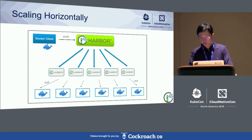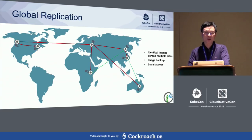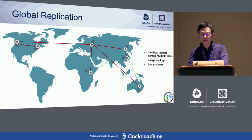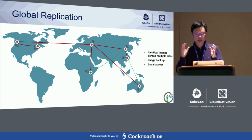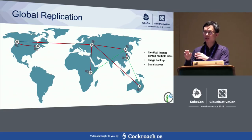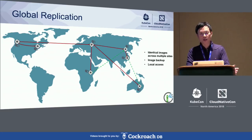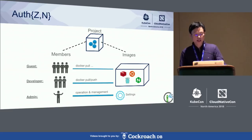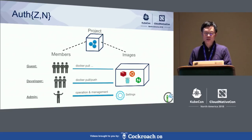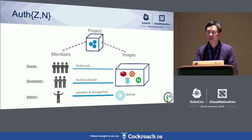Another replication use case is global replication — replicating images across different locations, either in the cloud or in data centers. We have a very large bank that uses Harbor to replicate images across different offices on different continents. This way they have image backups in different locations as well as local access to images for each location, making image distribution very efficient for operational purposes.